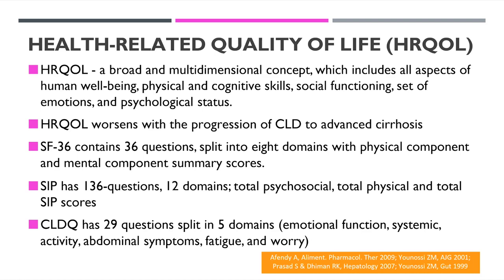The SF-36 contains 36 questions split into eight domains with physical and mental component summary scores. The SIP — used in our studies — contains 136 questions across 12 domains including total psychosocial, total physical, and total SIP scores. The CLDQ has 29 questions split into eight domains: emotional, systemic, activity, abdominal symptoms, fatigue, and worry.